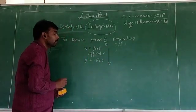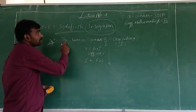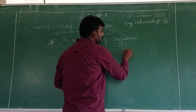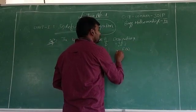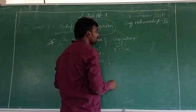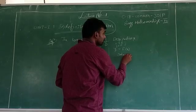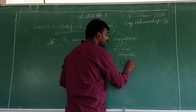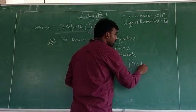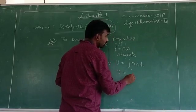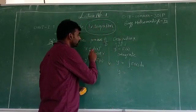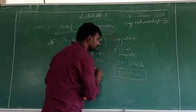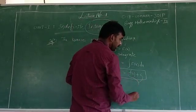Now we have to write the reverse process of the derivative. That means take f of x as a function, and given y dash, then integrate. By integrating, y dash becomes integrated with f of x, so y is equal to capital F of x, which is f of x plus c, where c is a constant. This is called the integral value.